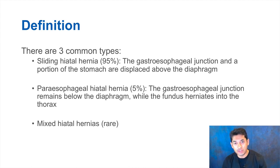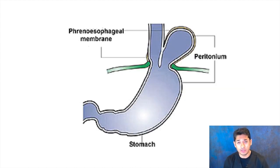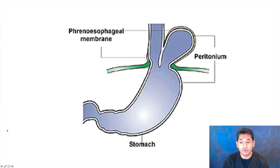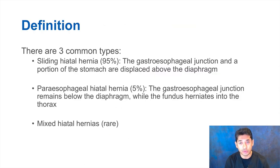The next is the paraesophageal hernia, which is only about 5% of all hernias. This is when the GE junction remains below the diaphragm while the fundus herniates into the thorax. A paraesophageal hernia is different in that part of the fundus of the stomach goes above the diaphragm, as opposed to going up into the esophagus. You also have mixed hernias combining both types, but these are very, very rare. The two main hernias you should be aware of are hiatal hernias and paraesophageal hernias.